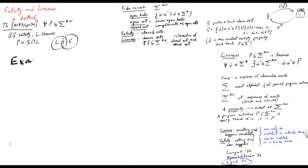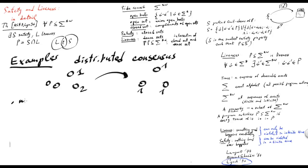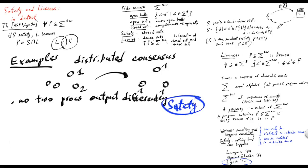We'll conclude with some examples. If we take the classical problem of distributed consensus — where a set of processes start with private inputs and then at the end of computation they need to agree on one of the common inputs — the property which says that no two processes output different values is the safety property.